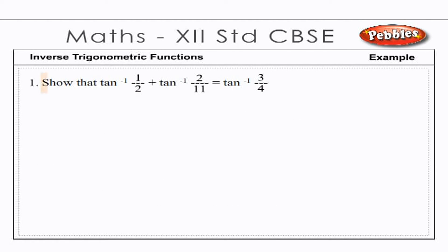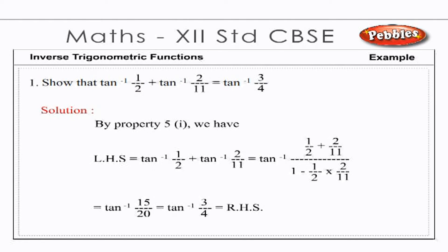Example: Show that tan⁻¹(1/2) + tan⁻¹(2/11) = tan⁻¹(3/4). Solution: By Property 5(i), LHS = tan⁻¹((1/2 + 2/11) / (1 − (1/2)(2/11))) = tan⁻¹(15/20) = tan⁻¹(3/4). Hence proved.